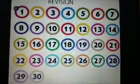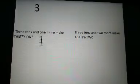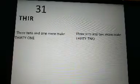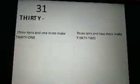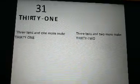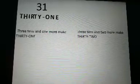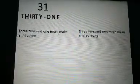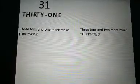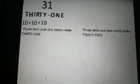Now we will continue to learn new numbers. 3 and 1 makes the number 31. T-H-I-R-T-Y O-N-E, 31. Please repeat after me: T-H-I-R-T-Y O-N-E, 31. The number 31 comes just after the number 30. 3 tens and 1 more make 31.